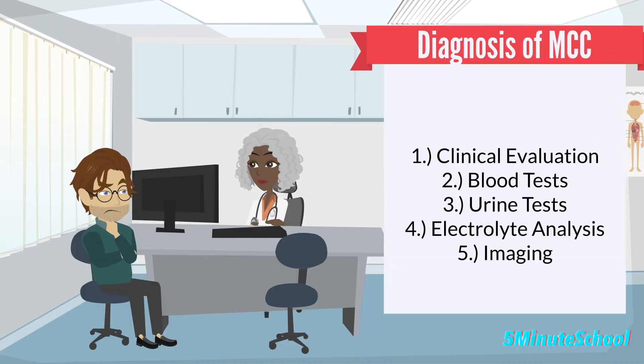Rhabdomyolysis is typically diagnosed based on a combination of clinical symptoms and lab tests. A clinical evaluation involves assessing symptoms such as muscle pain, weakness, dark urine due to myoglobin in the urine — called myoglobinuria — and certain swellings, which may raise suspicion of rhabdomyolysis.